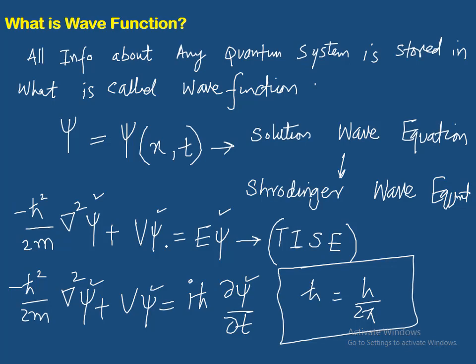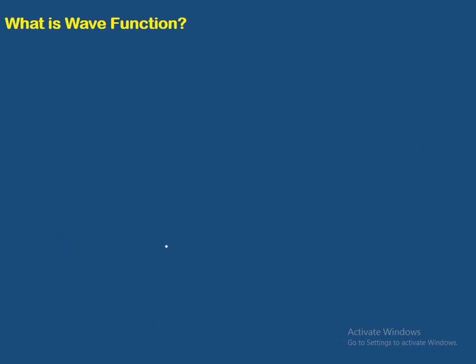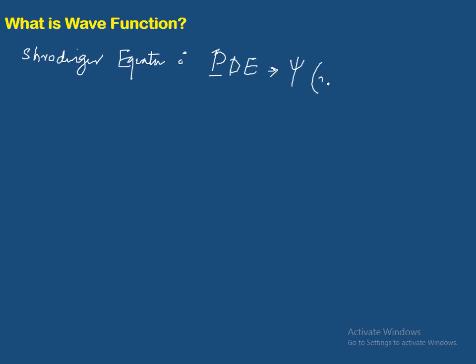Ab sawal ye hai ki Schrödinger equation ki kya properties hain. Mein likhta hoon one by one. Schrödinger equation jo hai, ye partial differential equation hai, kyunki psi jo hai wo ek se zyada independent variables pe dependent karta hai — x, y, z ho sakta hai. Time ko first-order derivative hai respect to psi — first order in time hai.